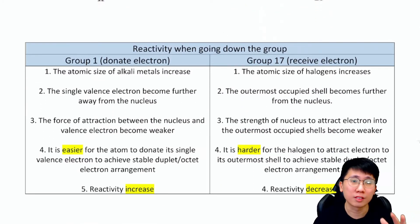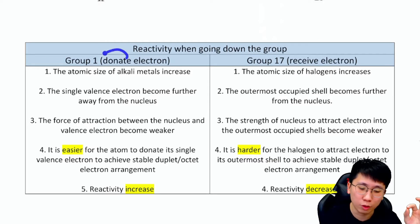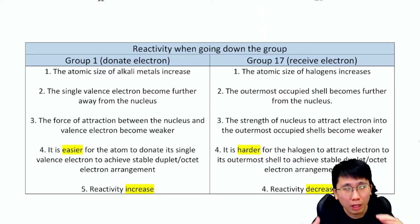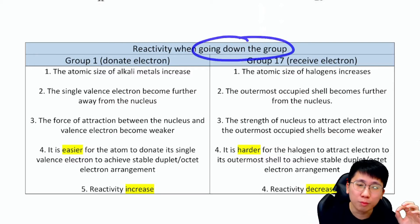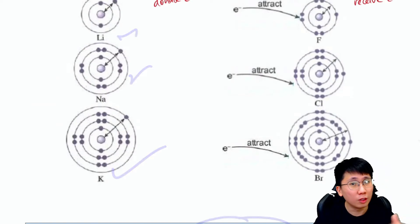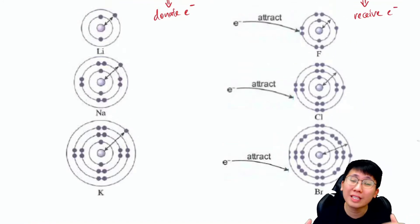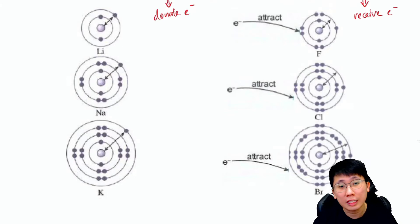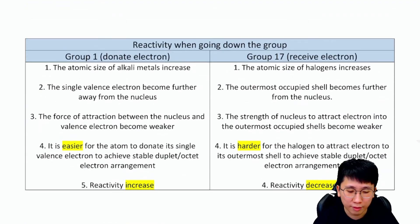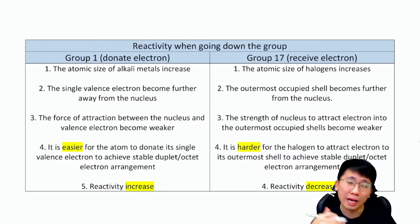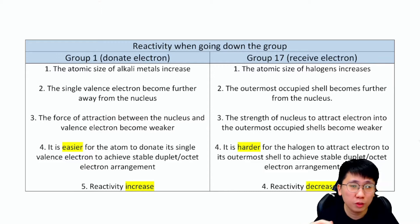I put Group 1 and Group 17 in comparison because Group 1 is trying to donate electrons while Group 17 is trying to receive electrons. The key question is: when going down Group 1 — from lithium to sodium to potassium — does reactivity increase or decrease? Same question for Group 17 — from fluorine to chlorine to bromine.